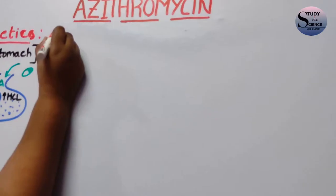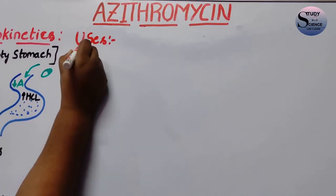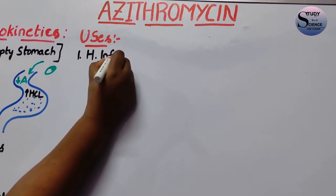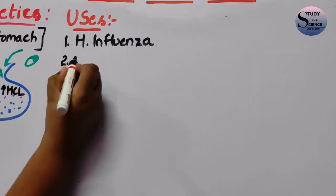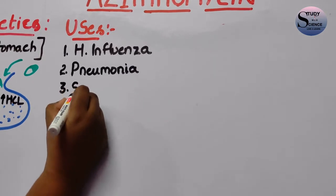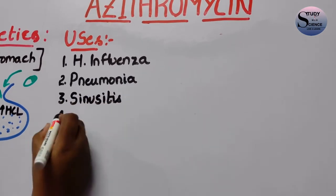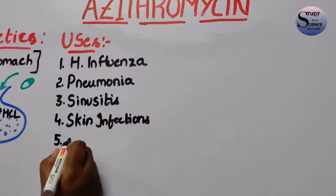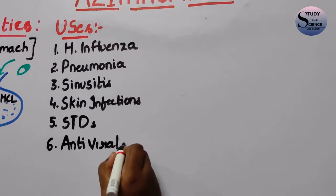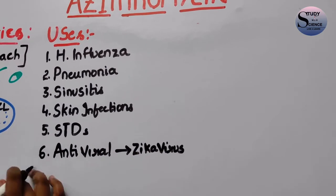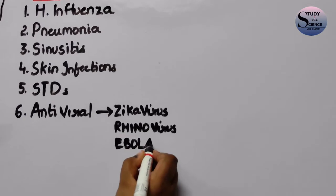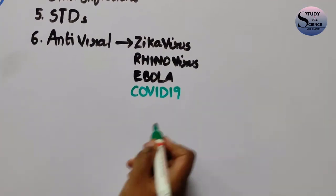Now let us discuss the uses of Azithromycin. It is mainly used in respiratory tract infections including those caused by H. influenzae, pneumonia, sinusitis, and many skin infections, as well as sexually transmitted diseases (STDs). It also has some antiviral properties and can treat epidemic diseases like Zika virus, Rhinovirus, and Ebola virus, and it has been used in the treatment of COVID-19 recently.